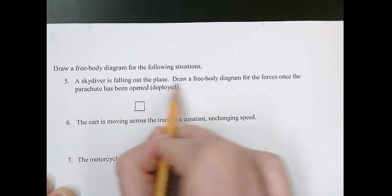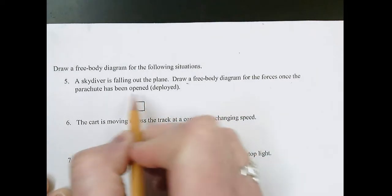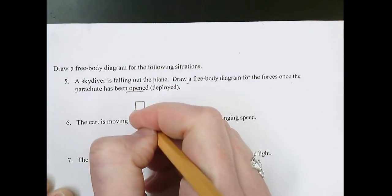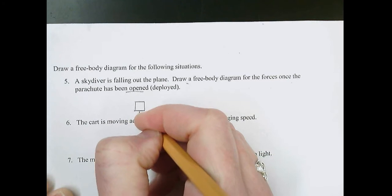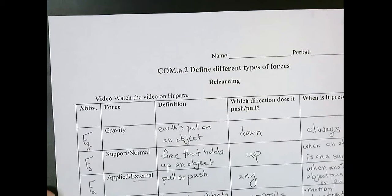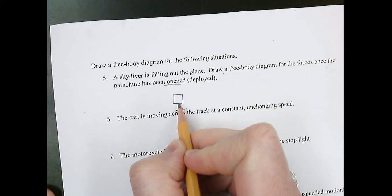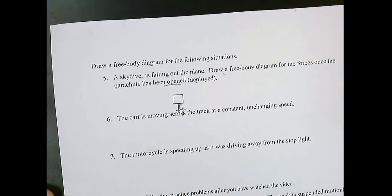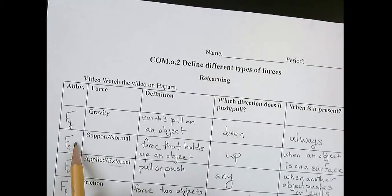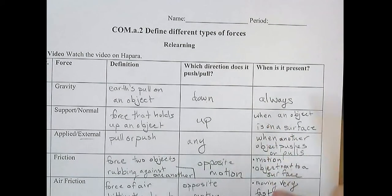Skydiver is falling out of the plane. Draw a free body diagram for the forces once the parachute has been opened. All right. So we're going to draw gravity. Oh, sorry, I've got to go through my steps. So first step, check each of the forces. Gravity. Yep, there's gravity because there's always gravity. Second, is there a support force? Well, is the object on a surface? No, the thing's falling. The person's falling.